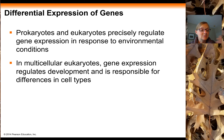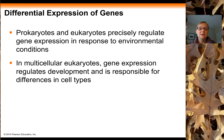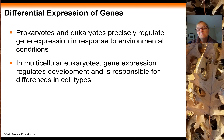For example, certain prokaryotes might find themselves in the presence of lactose and say, 'I can use this lactose, I can digest it and use it as a source of fuel.' So they turn on the genes needed to metabolize that lactose and use the monosaccharides as fuel. If lactose is not available, prokaryotes don't even bother turning on those genes because they're not useful at that time.